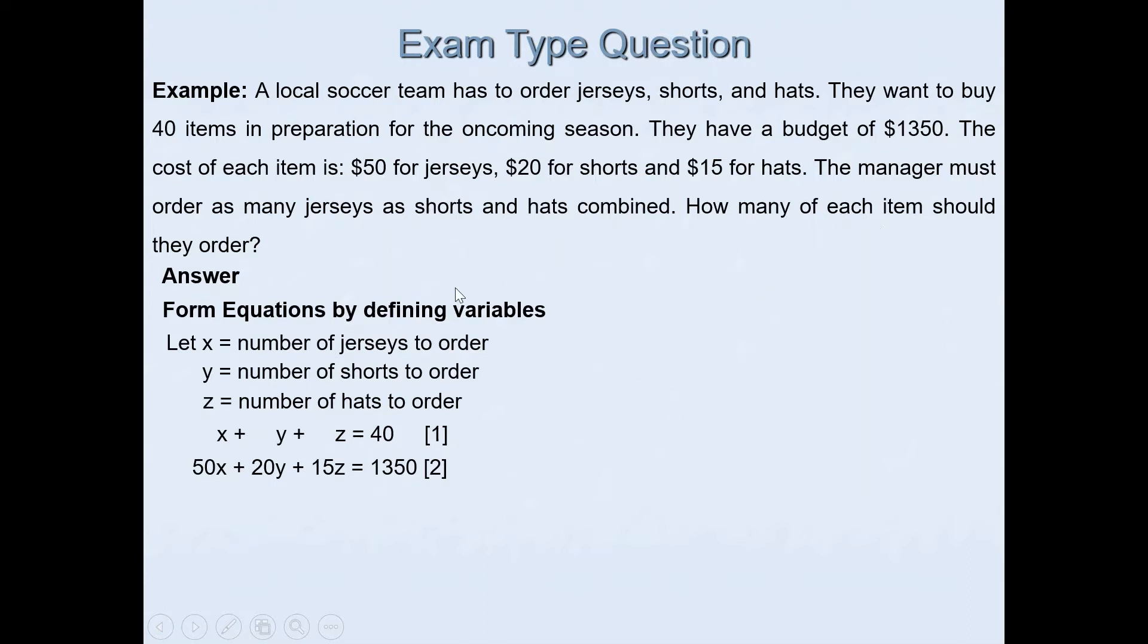The manager must order as many jerseys as shorts and hats combined. In other words, if I add the number of shorts and hats, it should equal the number of jerseys. So we can write the equation x = y + z. This is our third equation.